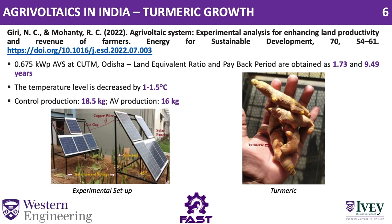This research was done in India on turmeric. A 0.675 kilowatt system was installed, and it showed that the land equivalent ratio and payback periods were 1.73 and 9.49 years respectively. The land equivalent ratio identifies whether the combined use of PV and agriculture is beneficial — a ratio greater than 1 means Agrivoltaics is beating separate land use and providing more benefits. The research also showed that temperature levels for the solar panels decreased by almost 1 to 1.5 degrees Celsius because crops are growing underneath them, impacting the microclimate and increasing PV efficiency.